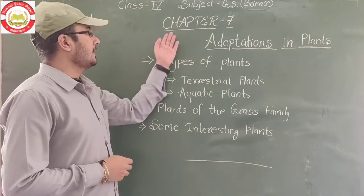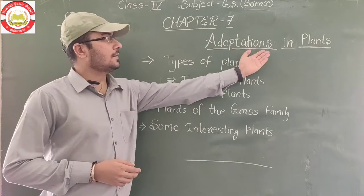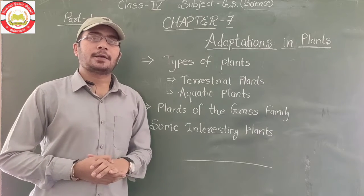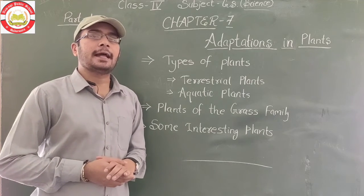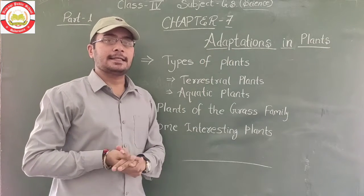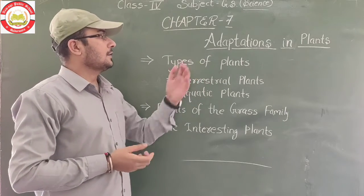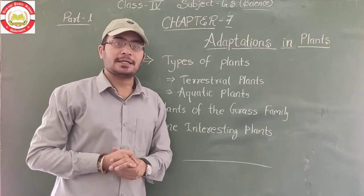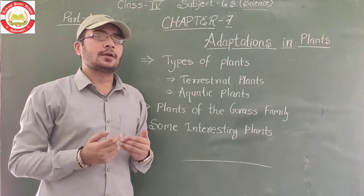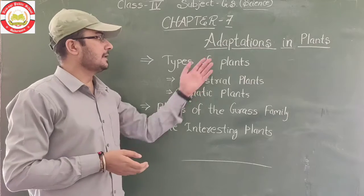Hello dear students, today we are starting our chapter number 7. Chapter number 7 is named adaptation in plants. Adaptation in plants means the place where plants are grown, they adopt their atmosphere and environment. Adaptation means the traits that help a plant grow in a particular region — that means adaptation.